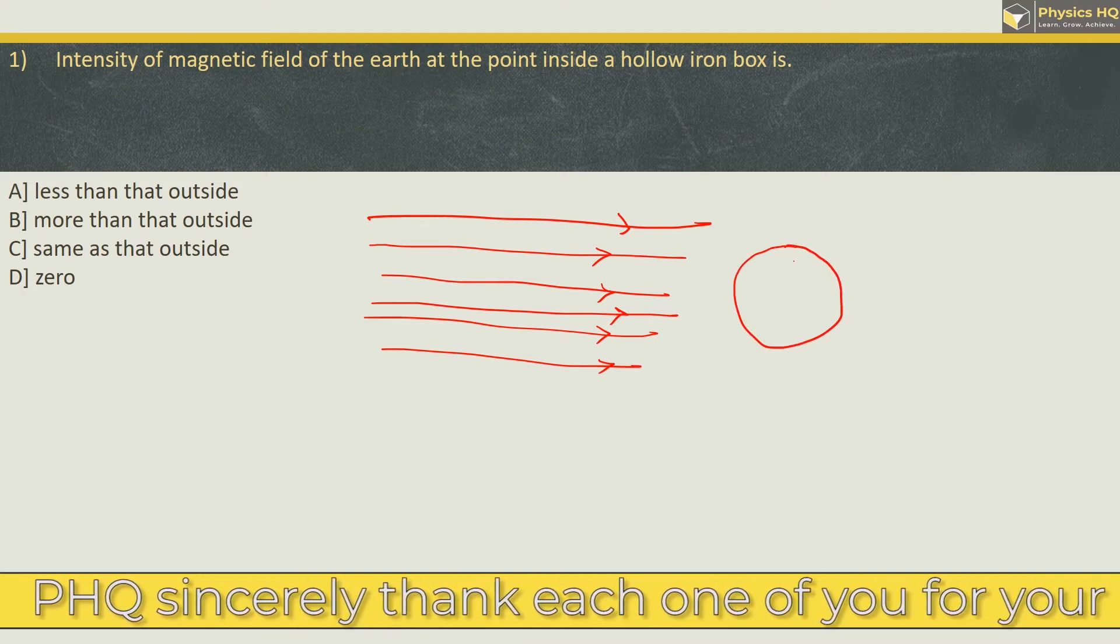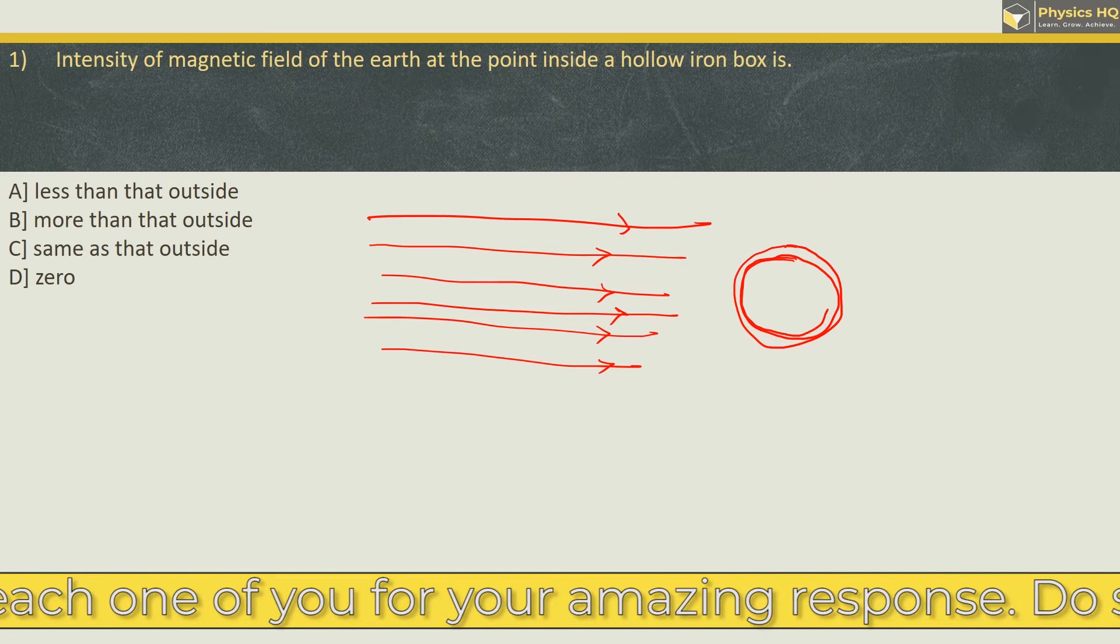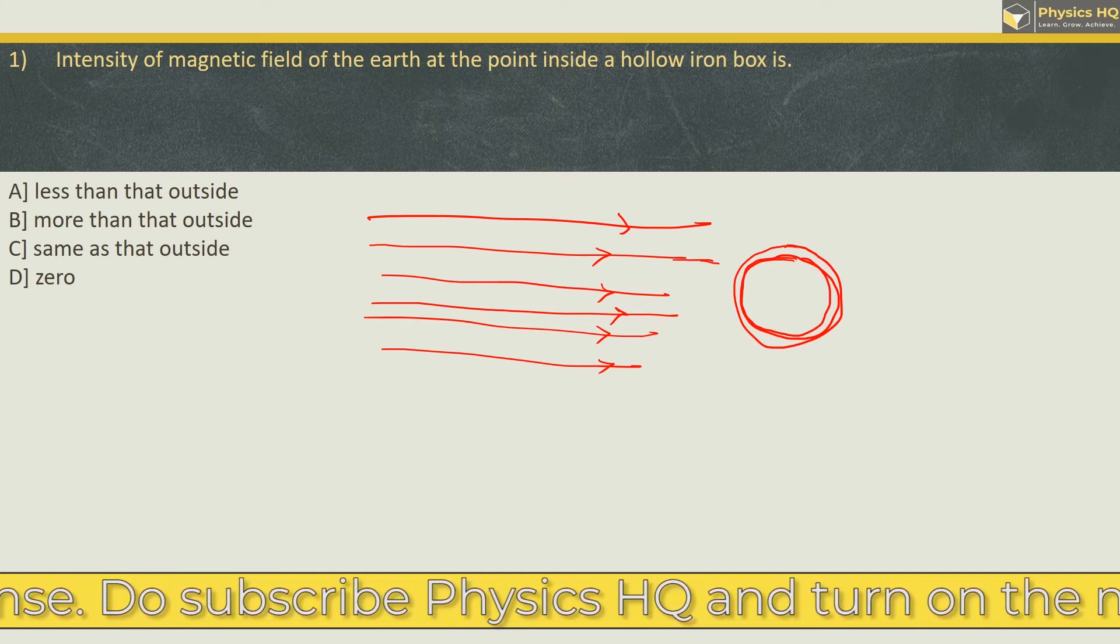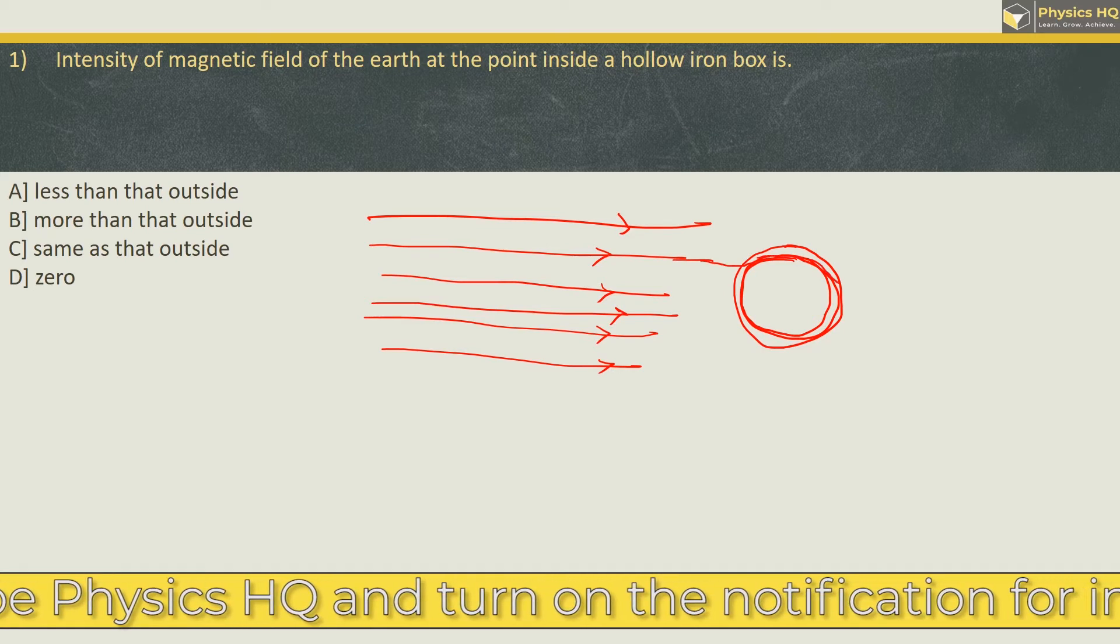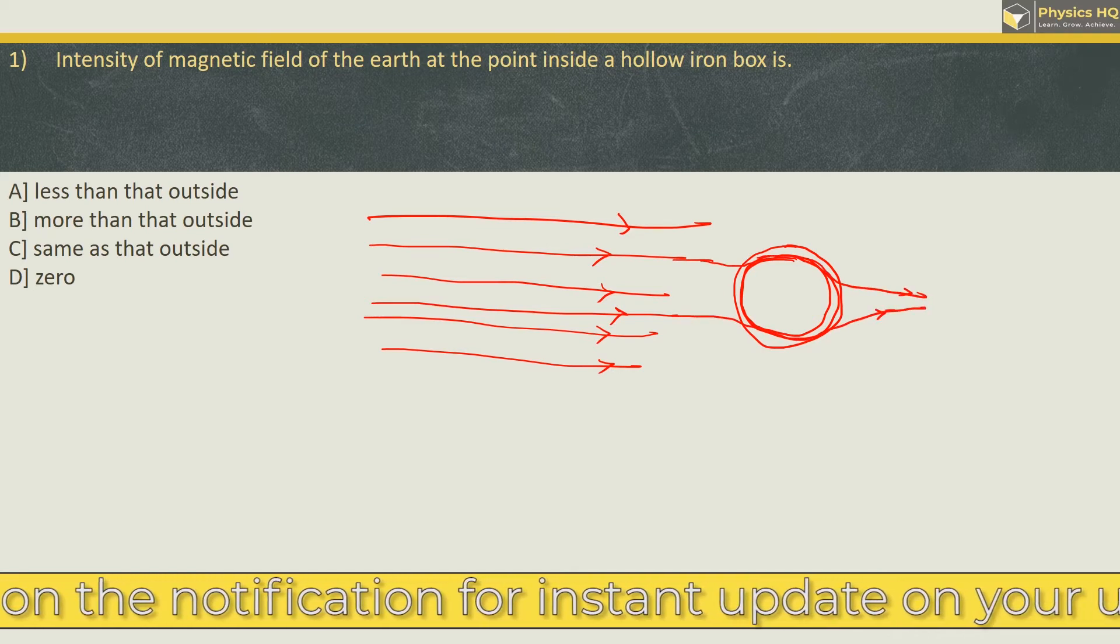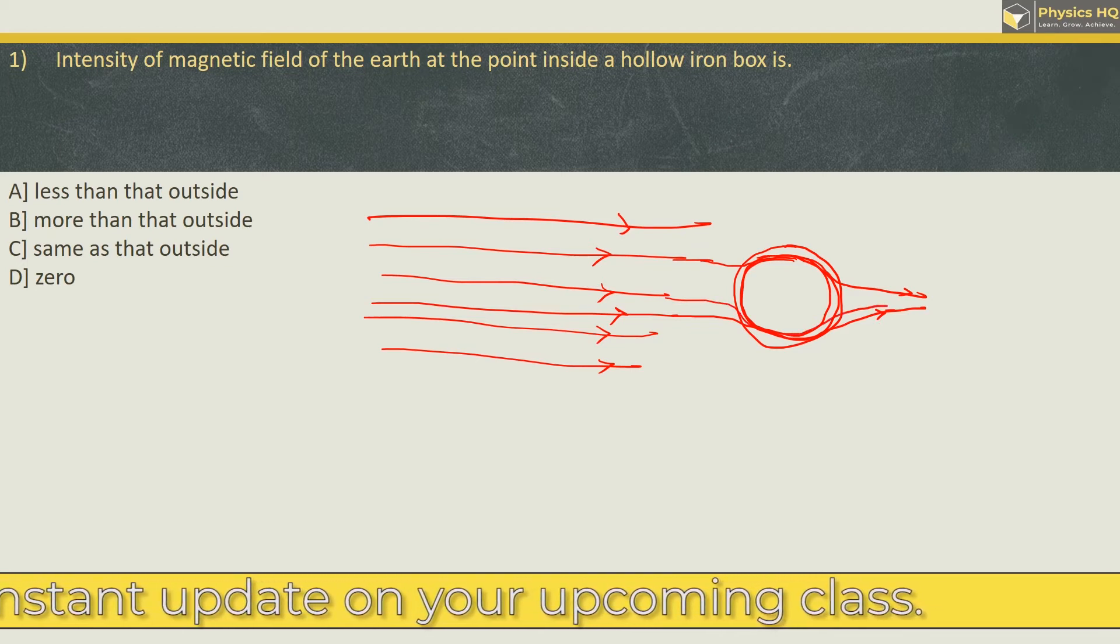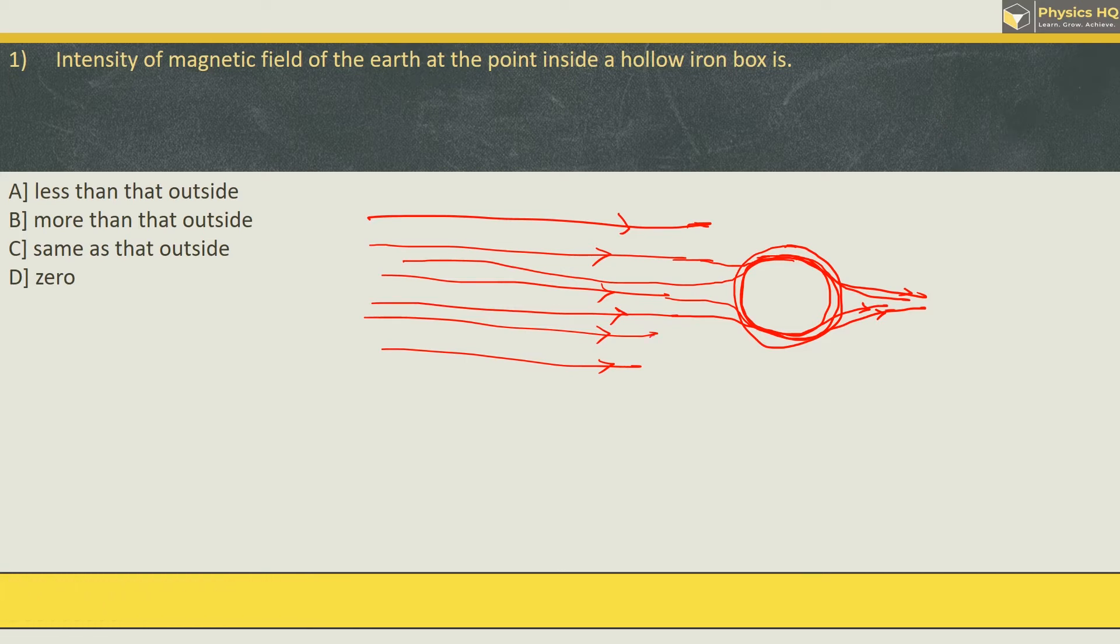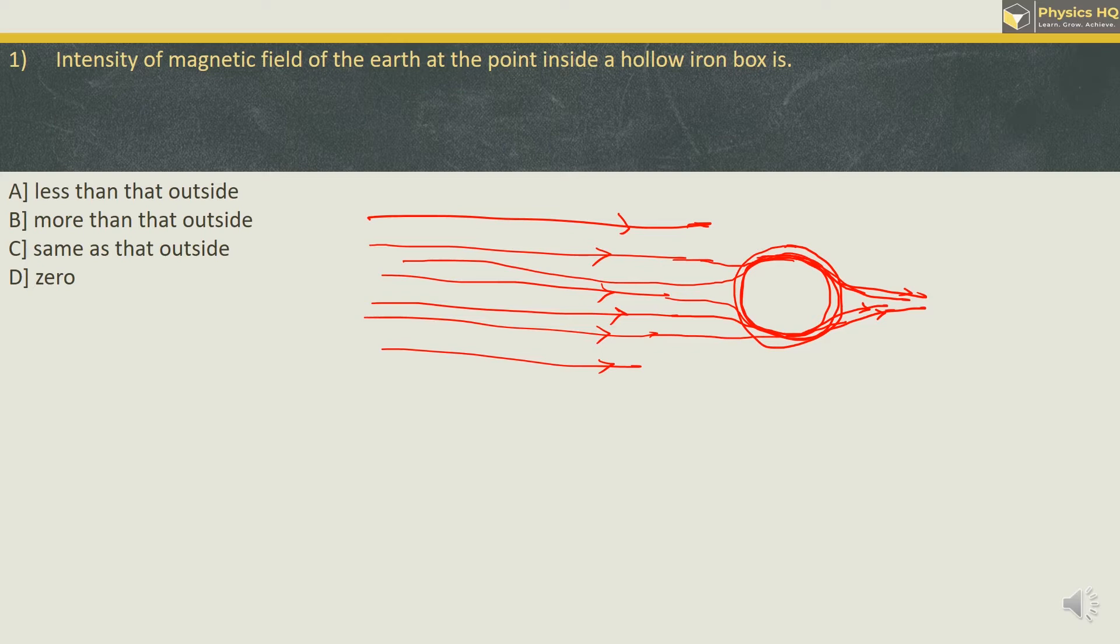...then these magnetic lines of force, they tend to flow through the surface of this iron box. Now this happens because permeability of the soft iron is very high compared to air. Therefore these magnetic lines of force flow through this iron box and very small amount of magnetic field is able to reach inside and therefore the correct option is less than that of outside. Hope you all understood this.